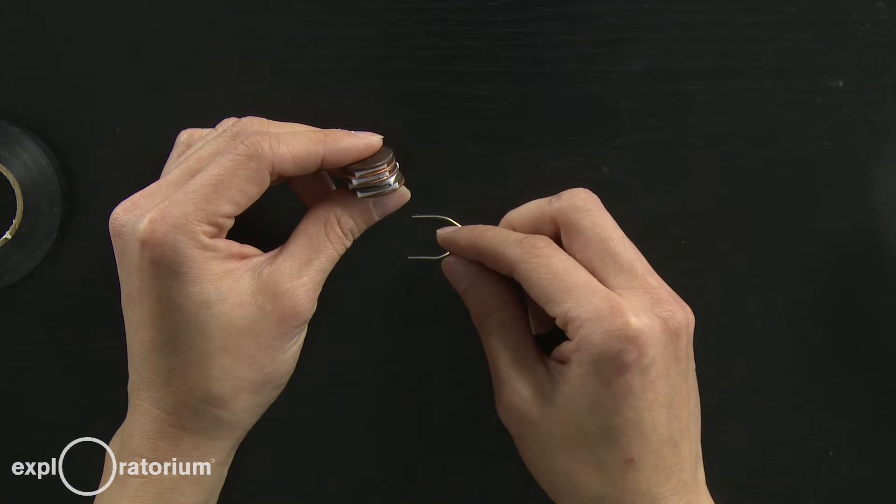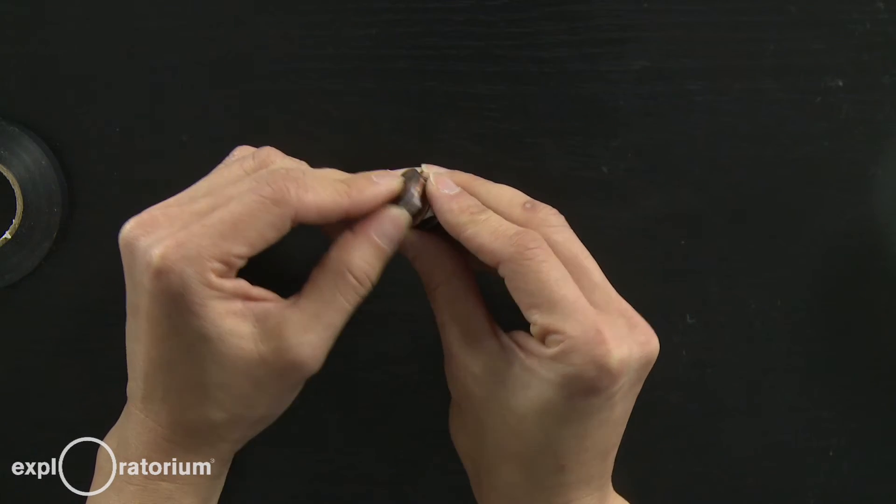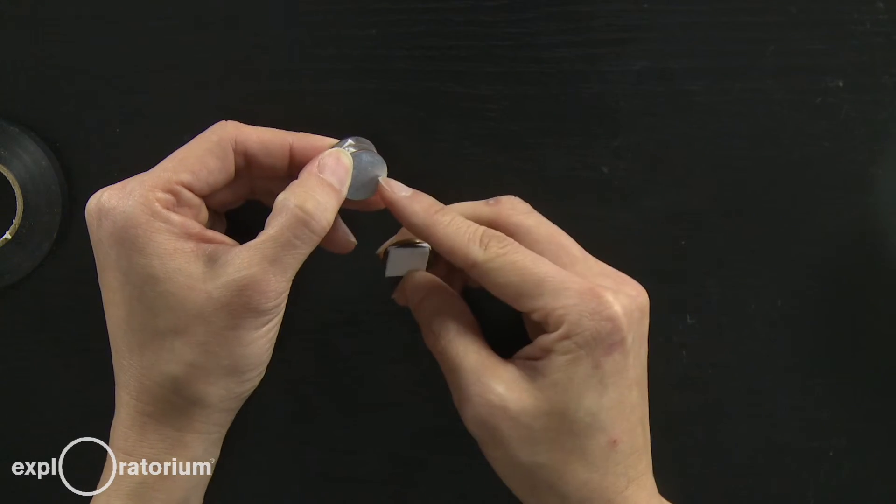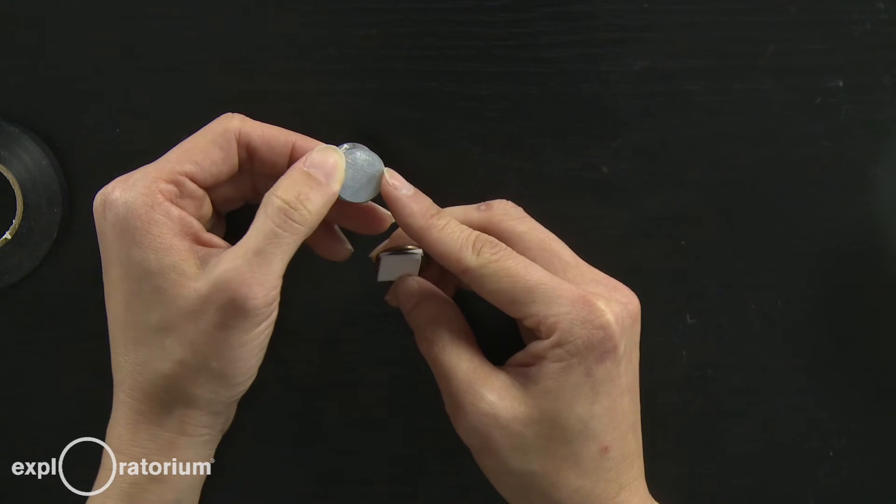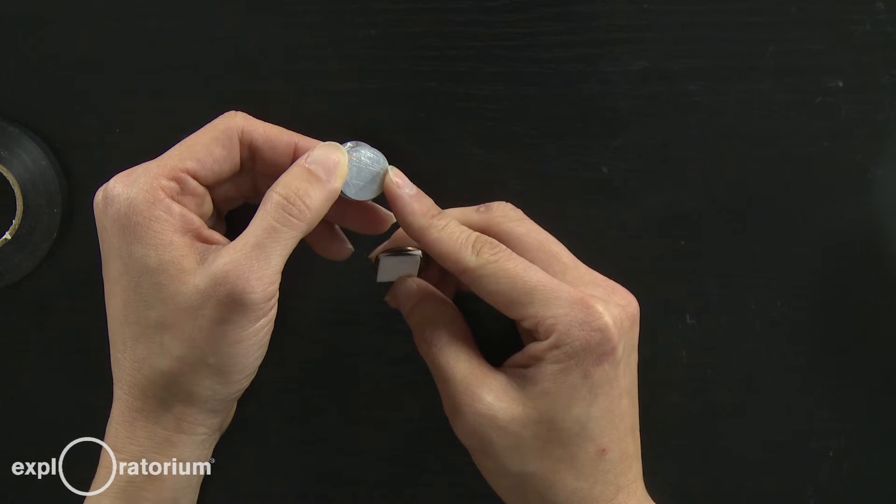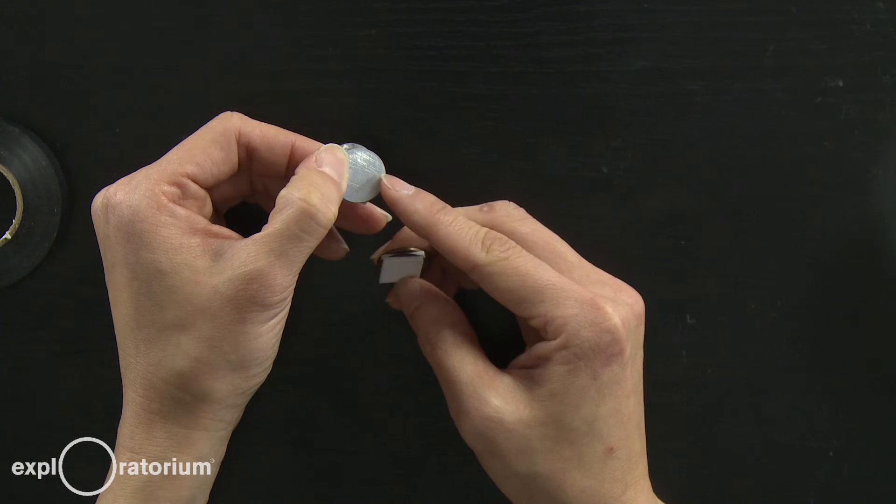Another thing that can go wrong, you may have already noticed. If you get a penny made before 1982, you can sand forever and you will never find a zinc center. So make sure your pennies are made after 1982, and make sure you sand completely. If there's any copper left on the surface of this penny, it will reduce the power of your battery.